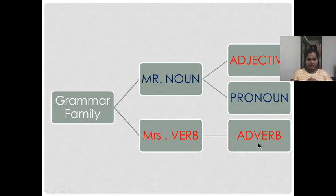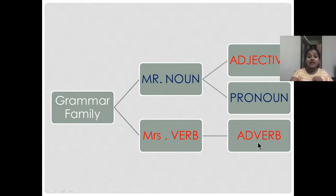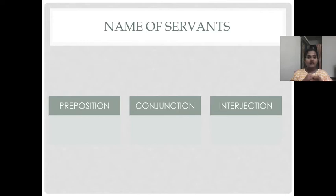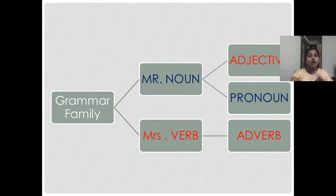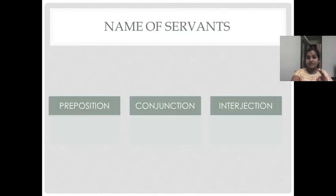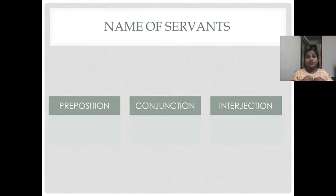This is a huge family and they are wealthy, so they have servants too — five family members and three servants. In order to serve these five members, especially the master of the house, they have three servants: Preposition, Conjunction, and Interjection. So in the Grammar family, altogether there are eight members — five family members and three servants. You might have studied these terms in your school days as the parts of speech. Instead of using that term, I'm using 'family' here to make it more interesting.